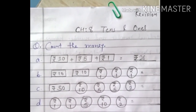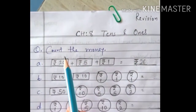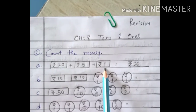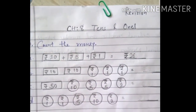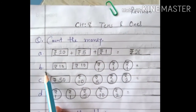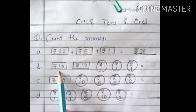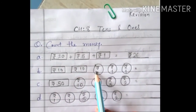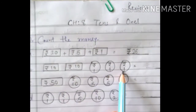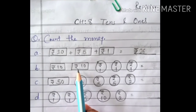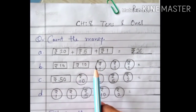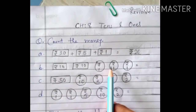Try to do it orally without making circles and lines — you should know that 20 plus 5 is immediately 25, then plus 1 is 26. Now example B: here is a ₹10 note, another ₹10 note, a ₹1 coin, a ₹1 coin, and a ₹1 coin. 10 plus 10 is 20, plus 1 is 21, plus 1 is 22, plus 1 is 23. So the answer is ₹23.